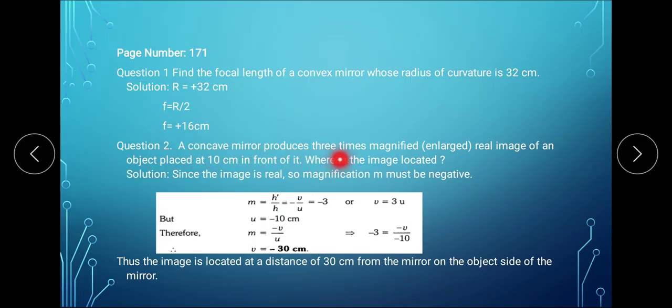Now read question number 2. A concave mirror produces 3 times magnified real image of an object placed at 10 cm in front of it. Where is the image located? Since it is a concave mirror and it forms real and 3 times magnified image, your magnification will be minus 3. Minus sign indicates that the image is real and 3 means it is 3 times magnified.